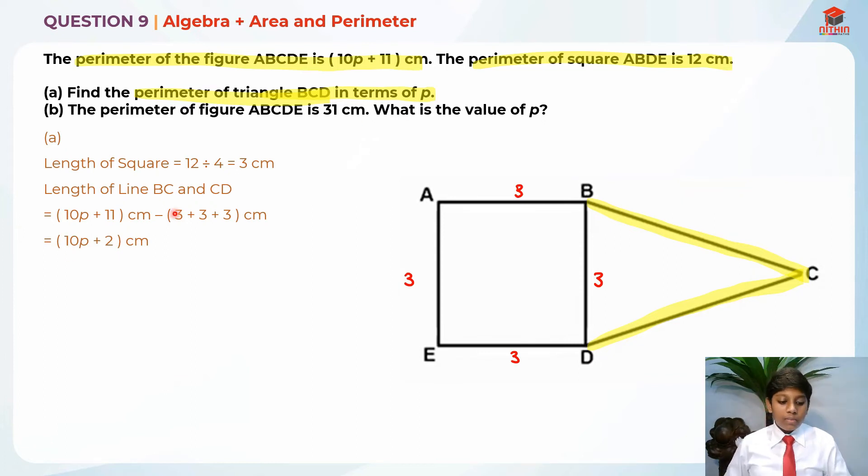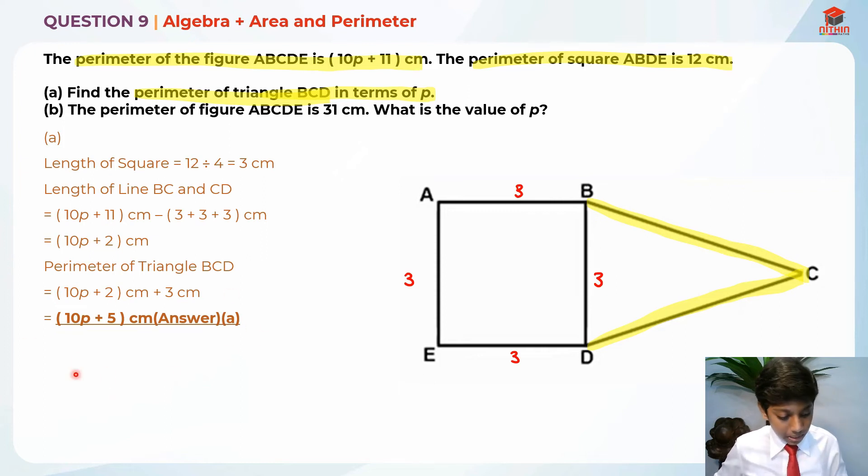So in order to find the perimeter of it, I'm just going to take 10p plus 2cm plus another 3cm. So it will give us 10p plus 2cm plus 3cm, which is 10p plus 5cm. So this is the answer for part A.